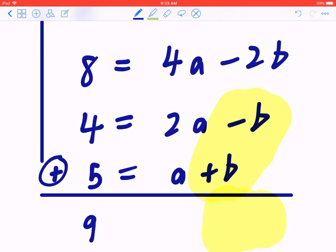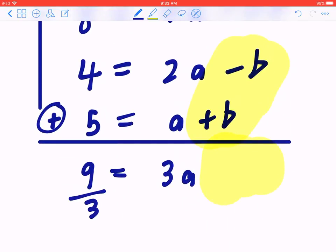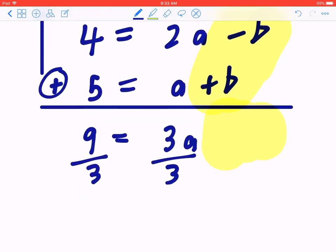So four plus five is going to give you nine, two a plus a is going to give you three a. This means the opposite of multiplying by three is to divide by three. So a equals three.